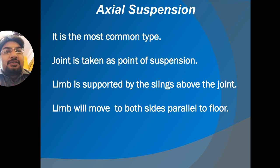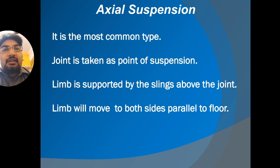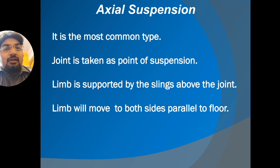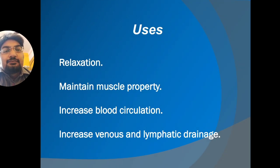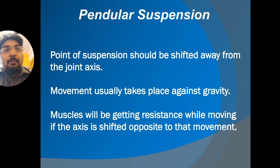Types of suspension therapy: axial, pendular, and vertical. In axial suspension, a limb is supported by a rope suspended from a point vertically above the joint to be moved. When the limb is relaxed, the joint rests in the neutral position. When movement is initiated, the limb swings freely to either side in a horizontal plane. It is the most common type, used for muscle relaxation, maintaining muscle properties, increasing blood circulation, and improving venous and lymphatic drainage.